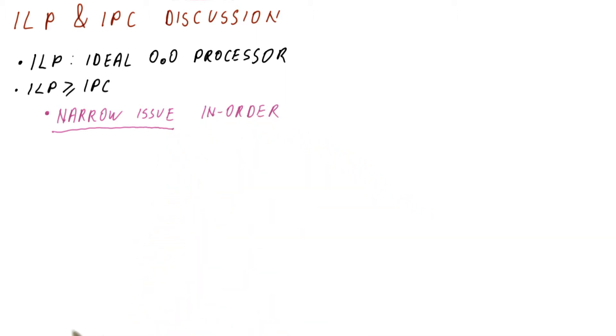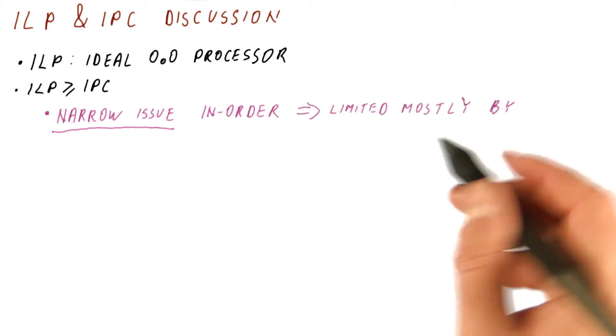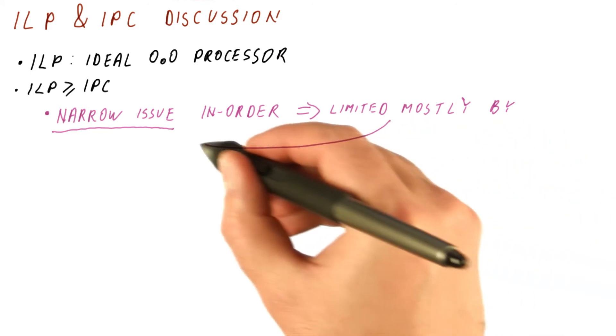Basically the in-order property is not going to hurt us too much. So this processor is going to be limited mostly by the narrow issue.